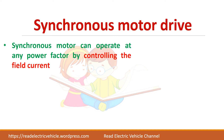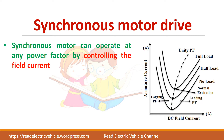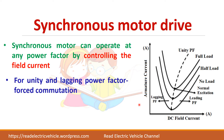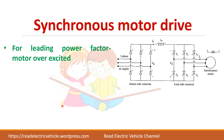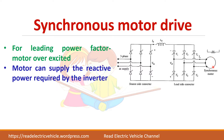The synchronous motor drive can operate at any power factor by controlling the field current. It can operate at lagging power factor, leading power factor, or at unity power factor. For unity and lagging power factor, the thyristors in the load-side converter are force commutated, meaning we need an external circuit to commutate the thyristors. For leading power factor, the motor is normally overexcited, so machine voltages can be used to turn off the thyristors — that is, load commutation is possible. In such cases, the motor can supply the reactive power required by the inverter.